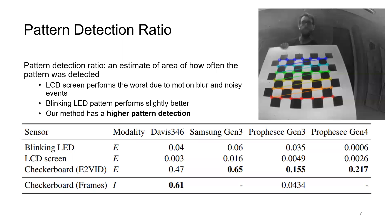The pattern detection ratio metric provides an estimate of how often the pattern was detected. The LCD screen has a low detection ratio due to motion blur and noise. Blinking LED performs slightly better. In contrast, our method outperforms the baselines and performs similar to the frame-based method for Davis 346.